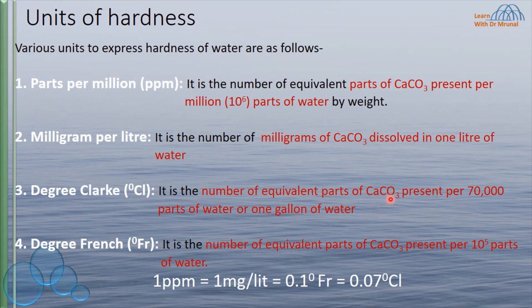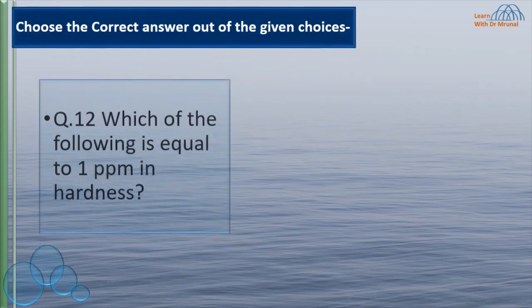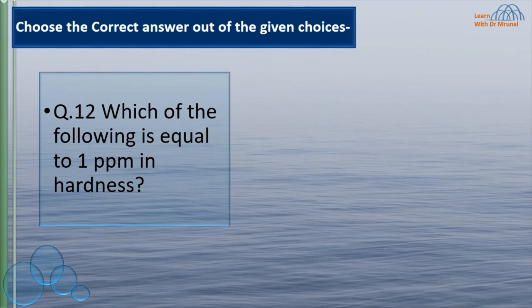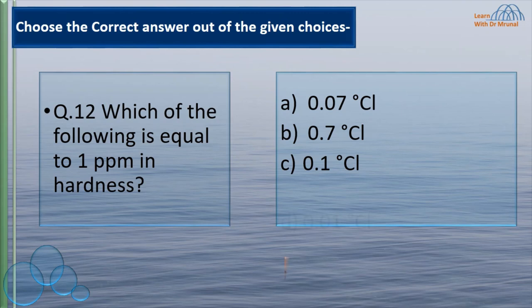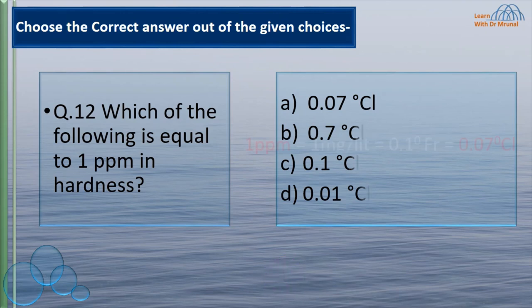In ppm, calcium carbonate is present in 10⁶ parts of water. In degree French, it is present in 10⁵ parts of water, and that is why 1 ppm equals 0.1 degree French. In degree Clark, calcium carbonate is present in 1 gallon of water. Which of the following is equal to 1 ppm in hardness? The correct answer is 0.07 degree Clark.